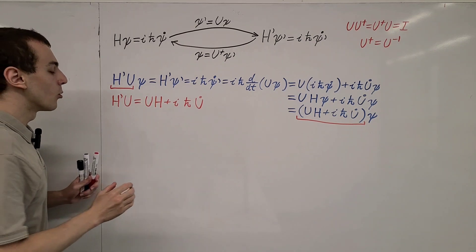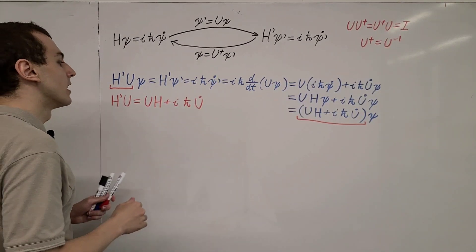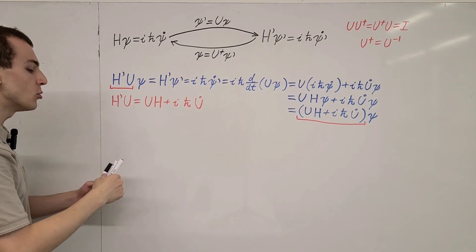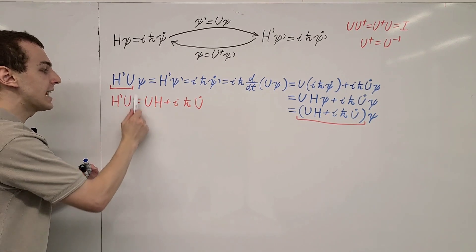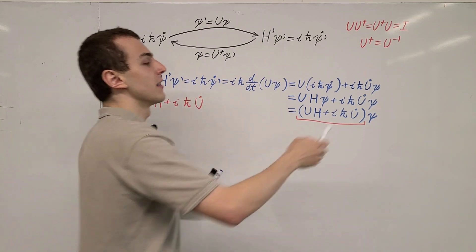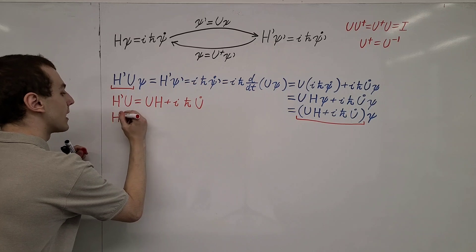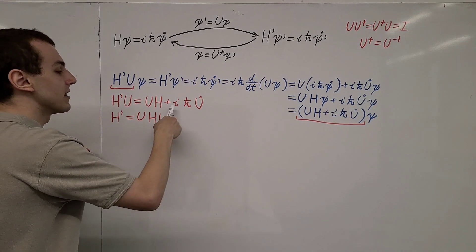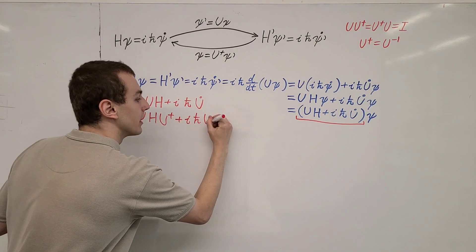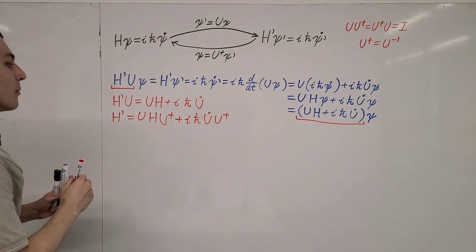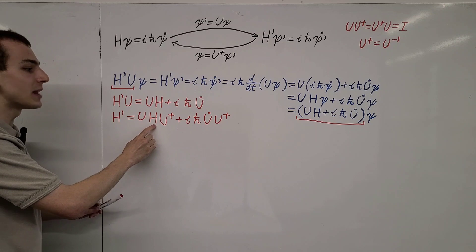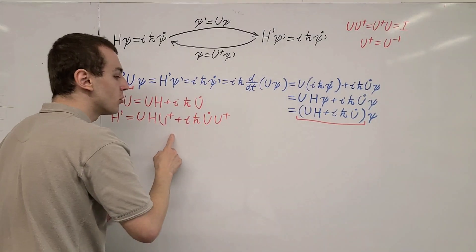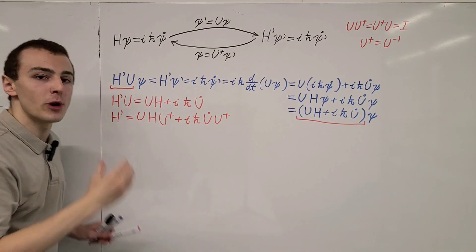Now we can act with U-dagger from the right to isolate H'. Acting on all terms from the right with U-dagger, the U on the left side is cancelled by U-dagger since U and U-dagger undo each other. That gives us: H' = U*H*U-dagger + i*h-bar*U-dot*U-dagger. So we have found a relationship between H' and H. This is how you transform the Hamiltonian — if you know the Hamiltonian in this frame and the unitary transformation, you compute this to get H' in the transformed frame.